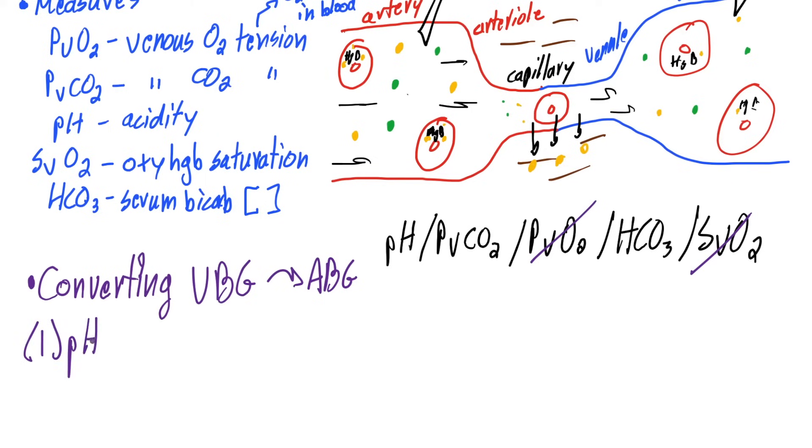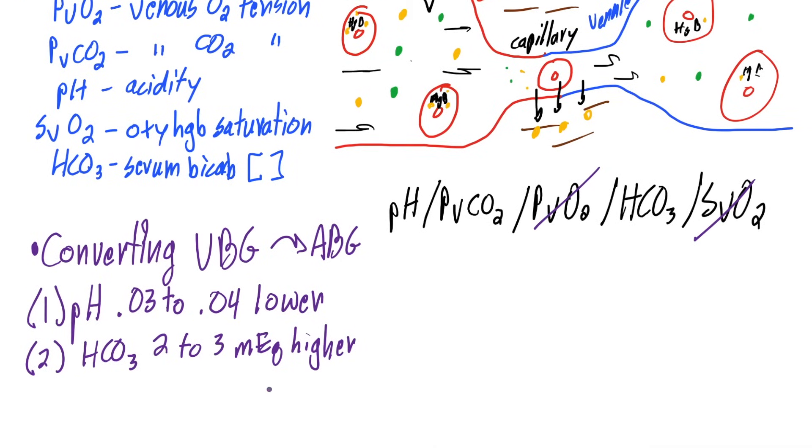For the pH, it's usually 0.032 to 0.04 lower in venous blood than arterial blood. For the bicarb, it's usually 2 to 3 milliequivalents higher in the veins than in the arteries. If your bicarb is higher, you would expect your pH to be higher, but it's lower, so that's something to keep in mind. And your PCO2 is usually 3 to 8 millimeters of mercury higher than your ABG. This makes sense because if your PCO2 is higher, your pH is often lower.